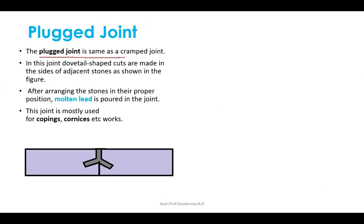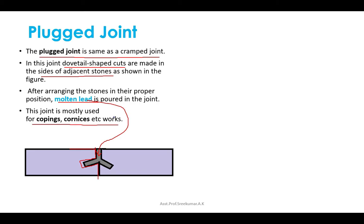The plug joint is similar to the cramp joint, but consists of making plug holes of dovetail shape in the sides of adjacent stones. After placing the adjacent stones, a common space for the plug is formed which is filled with molten lead. Sometimes rich cement grout is used instead of molten lead. This joint is mostly used for coppings, cornices, etc. Unlike the cramp joint, no metal cramp is used.